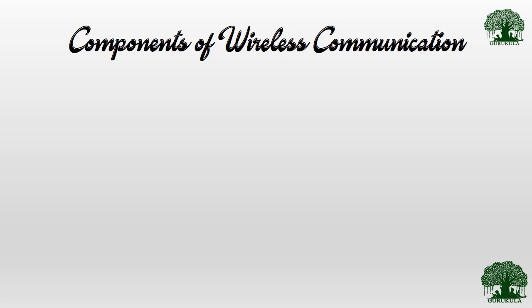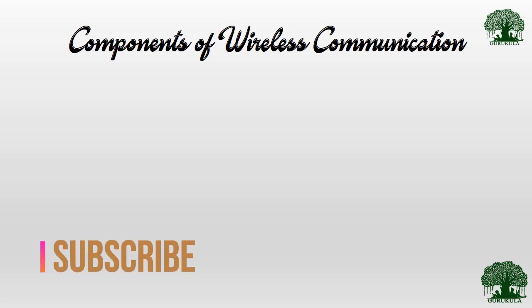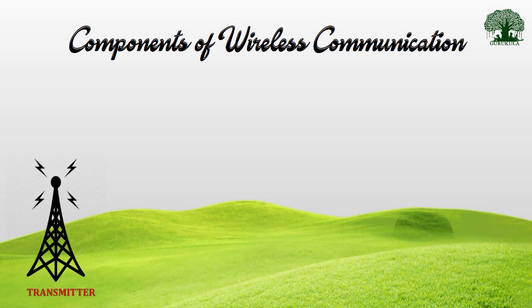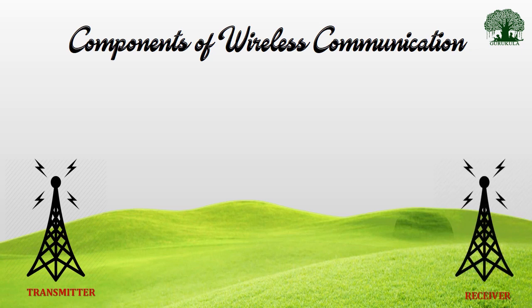Now let us see what are the key components involved in sending a message from one point to another. For simplicity, I will assume that the message is already generated, pre-processed, and ready to transmit. Based on this assumption, let us look at the components required for wireless communication. First, of course, I need a transmitter — the transmitter sends messages from one point, similar to a person standing in class and lecturing. He is the transmitter; he has certain messages to transmit.